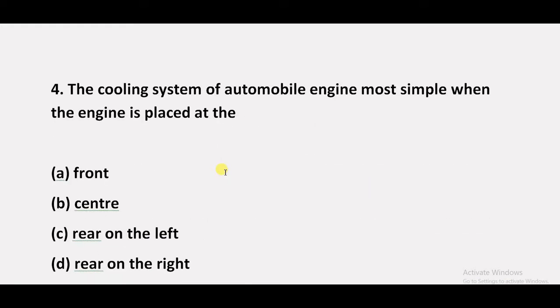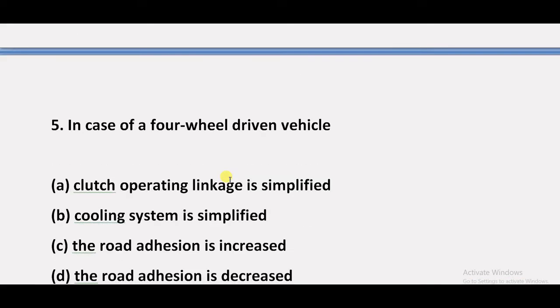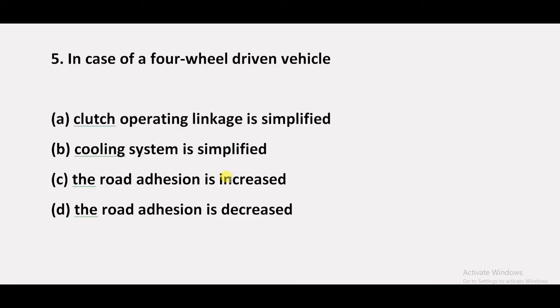Question 4: The cooling system of an automobile engine is most simple when the engine is placed at the — option A: front, option B: center, option C: rear on the left, option D: rear on the right. The answer is front — the cooling system is most simple when the engine is placed at the front.